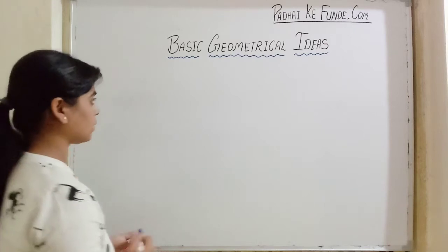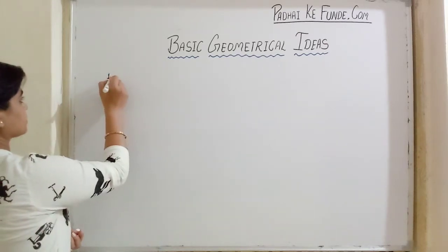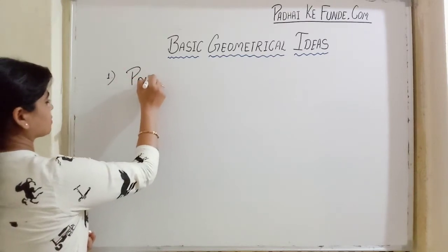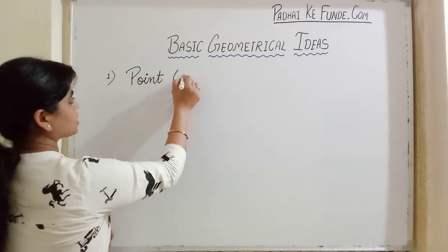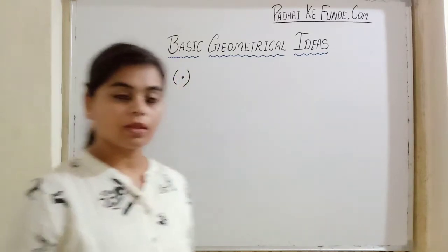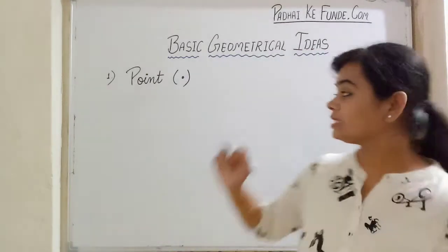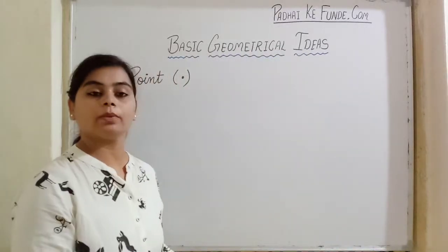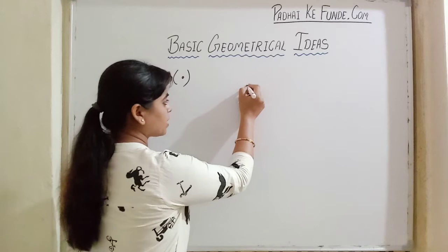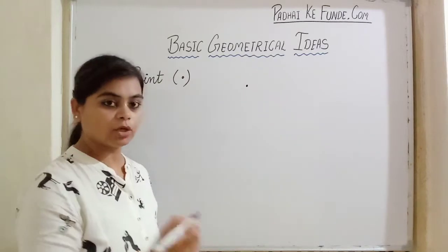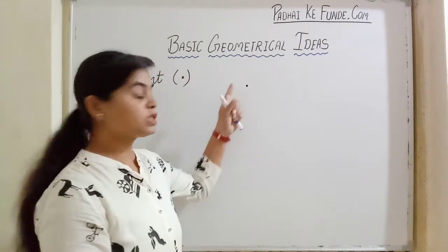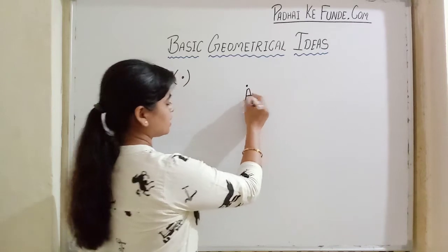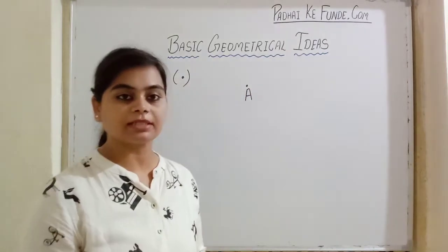So first we are thinking about a point, which is denoted like this as a dot. These are denoted with a capital letter of English alphabet. Anywhere to show position of anything, we make a dot like this. A dot made by any pin-pointed thing is called as a point.